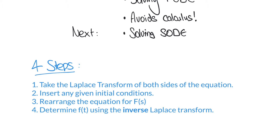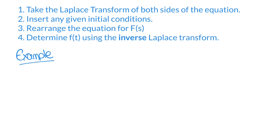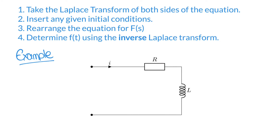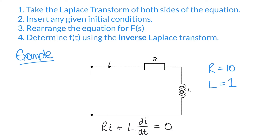And finally, step four, we're going to determine the expression for f of t by using the inverse Laplace transform. For the example in this video, let's have a look at this circuit. We have a series RL circuit and the current i, which is a function of time, is given by the equation: Ri plus L di/dt equals zero. The objective is to find a solution for the current i, given that the resistance R is 10 ohms, the inductance is one henry, and when time is zero the current i equals three amps.